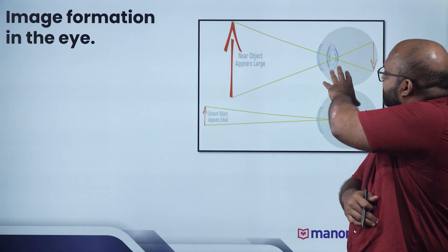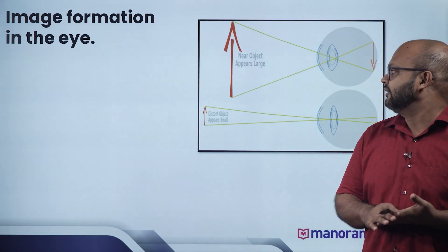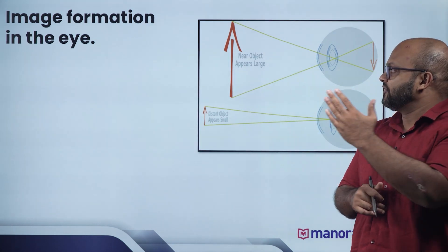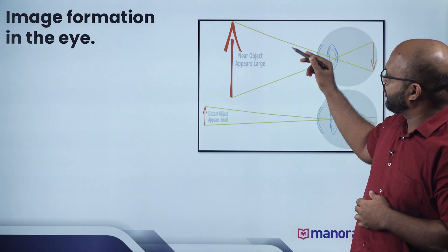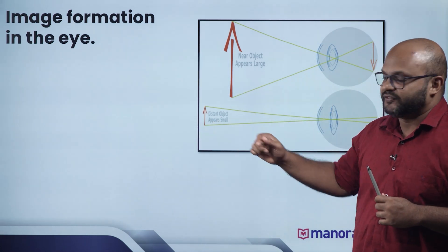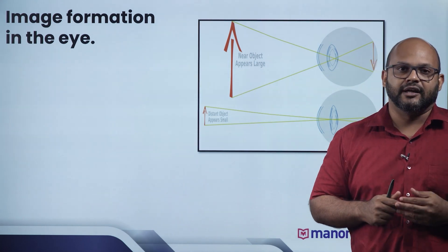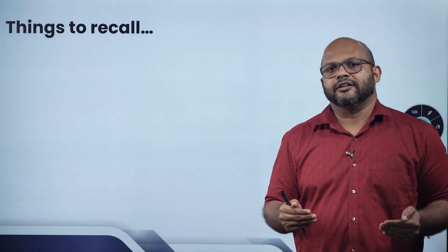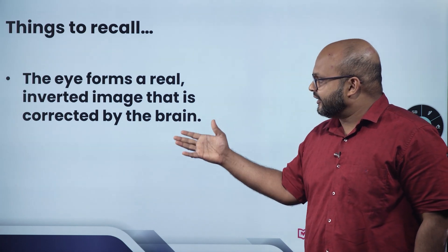When light travels from the front and crosses to the opposite screen, if the object is far away from our eyes, we perceive the size of the objects. The eye forms a real inverted image that is corrected by the brain.